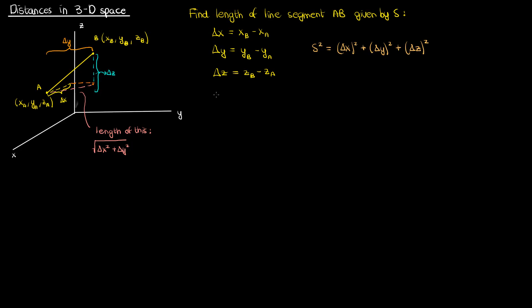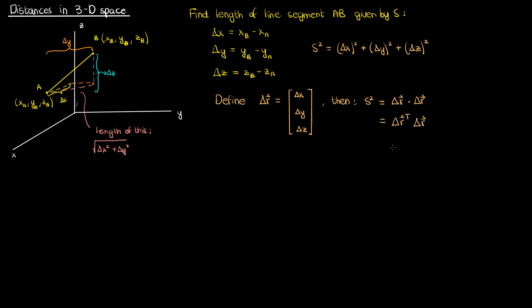Now can we rewrite this equation for capital S squared in matrix form? Of course we can. If I define a vector called delta r as a three-dimensional vector composed of the components delta x, delta y, and delta z, then capital S squared is really just the dot product of delta r with itself. I can also rewrite this dot product as the matrix product of the transpose of delta r and delta r itself — taking delta r transpose times delta r gives you the sum of the squares of delta x, delta y, and delta z, which is what we started out with.